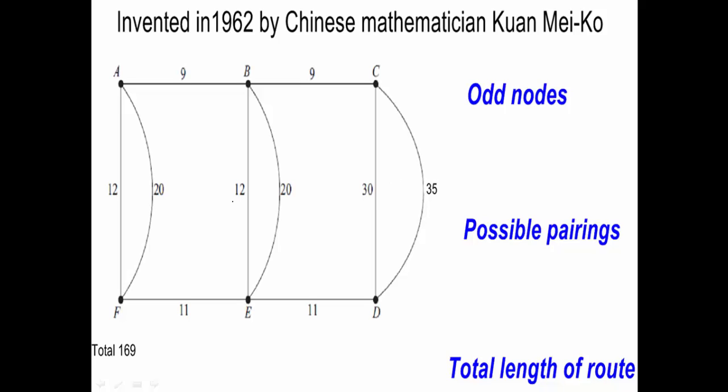So let's work through this slightly easier example here. The first thing you do is you look at all of the nodes and check the order of each node. And you can see here we've got order 3 at A, 4 at B, 3 at C, 3 at D, 4 at E, and 3 at F. And what we then do is we list the odd nodes. So we've got odd nodes: A, C, D, and F.